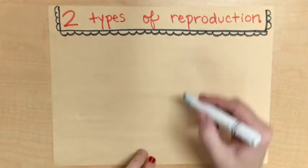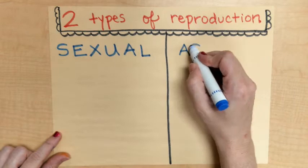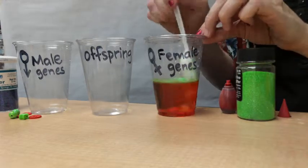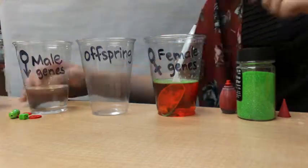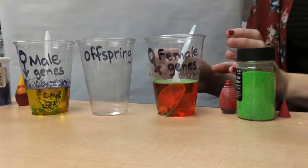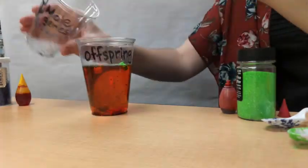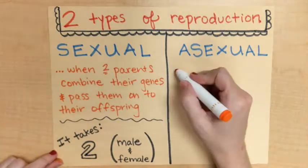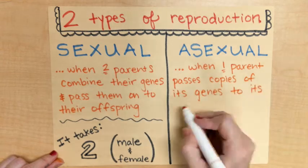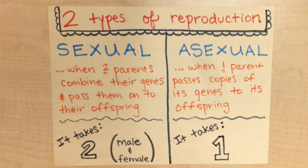When you talk about sexual reproduction, you are talking about two parents — one male, one female. The genes from both of those parents are coming together and combining, and then they are going to get passed down to their offspring. With asexual, that 'a' at the very beginning — just think 'all alone.' It only takes one parent to pass down those genes, almost like a copy from the parent to the offspring.